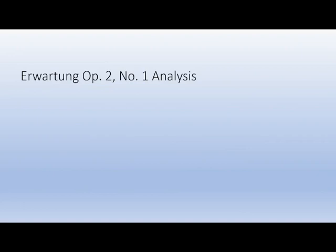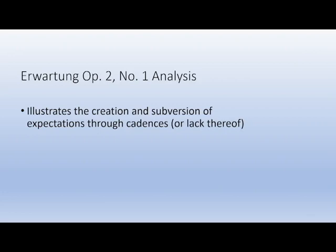Erwartung translates to "expectation," so I don't believe it's too much of a stretch to suggest that Schoenberg is intentionally playing with listener expectations in the piece. The purpose of this presentation is to illustrate how he does that, with a specific focus on harmony and cadences, and how those harmonic effects complement the narrative of the poem. I argue that Schoenberg creates specific implications with his choice of harmonies and then consistently subverts them, keeping the listener guessing about the key of the work until the very end.